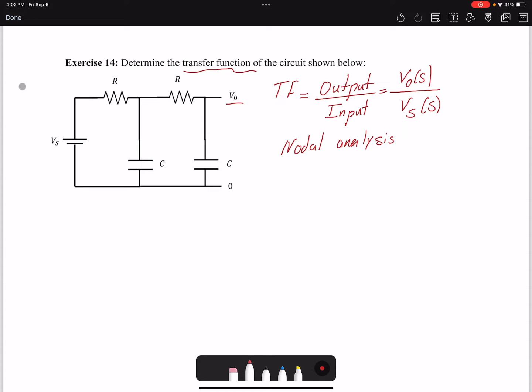Nodal analysis basically tells us current in equals current out. The other name is KCL, Kirchhoff's current law.